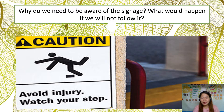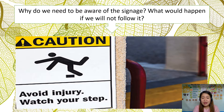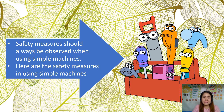Now look at the picture here. Why do we need to be aware of the signage, and what would happen if we will not follow it? As you can see, it says 'Caution: avoid injury, watch your step.' We need to be aware of the signage because we could have an accident if we are not following the caution. To avoid that, we have to be aware of those cautions around us.